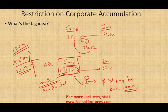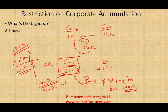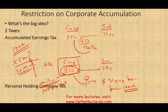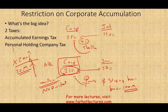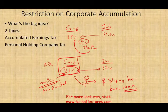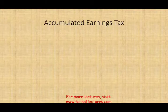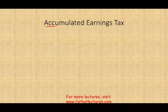So there's a restriction on how much money you can keep in the corporation without taking it out. The government imposes two possible taxes: the accumulated earning tax and the personal holding company tax. Let's talk about each one separately, because they are not imposed together at the same time. The accumulated earning tax — as the word suggests — means you're accumulating too much earnings, and therefore we're going to tax you on this.